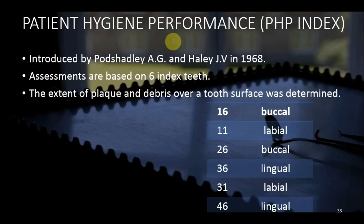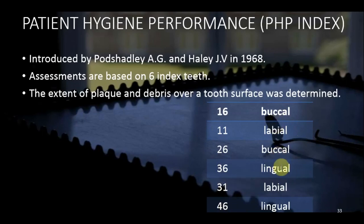The Patient Hygiene Performance (PHP) Index was introduced by Podshadley and Haley in 1968. It uses the same index teeth as OHI-S: 16, 11, 26, 36, 31, and 46. The same surfaces are used — buccal or labial for most teeth, lingual for 36 and 46. PHP is a plaque and debris index — unlike OHI-S which checks debris and calculus, PHP checks plaque and debris instead of calculus.